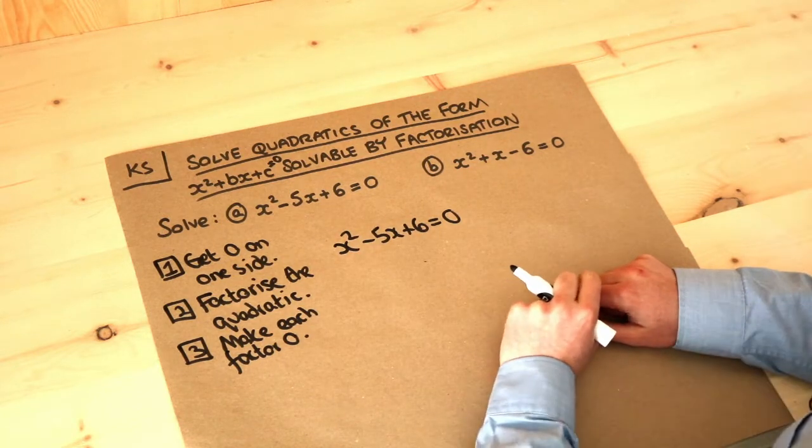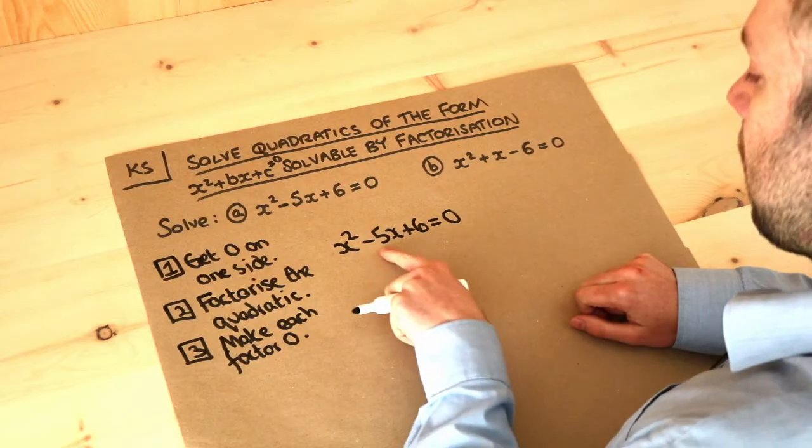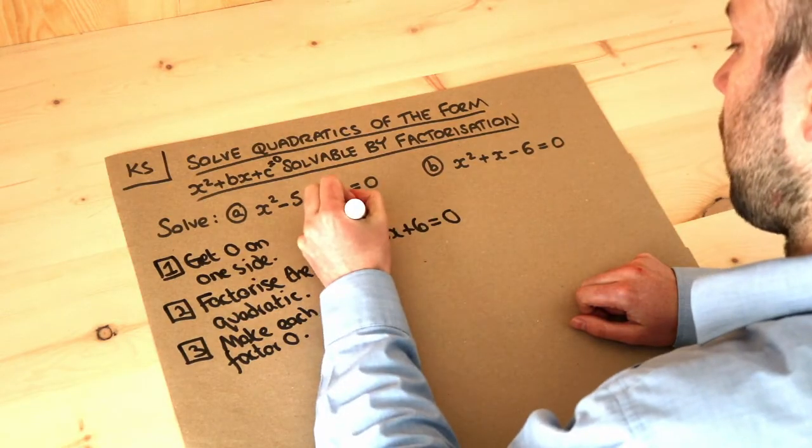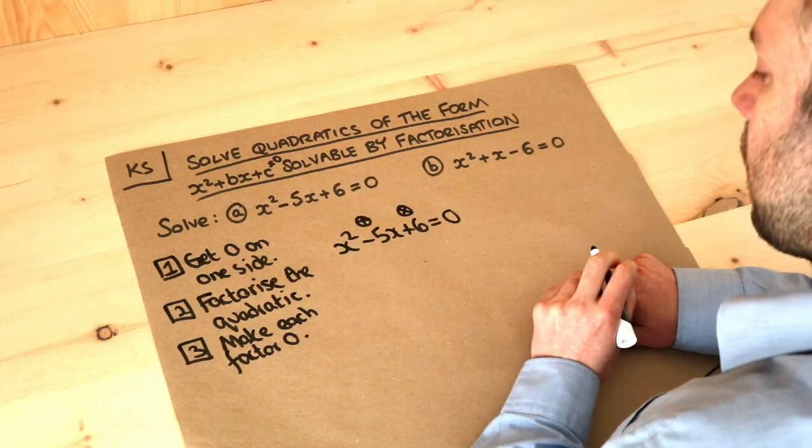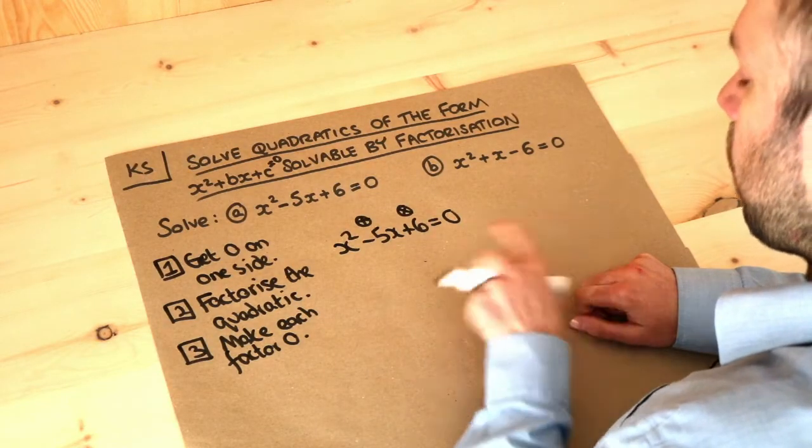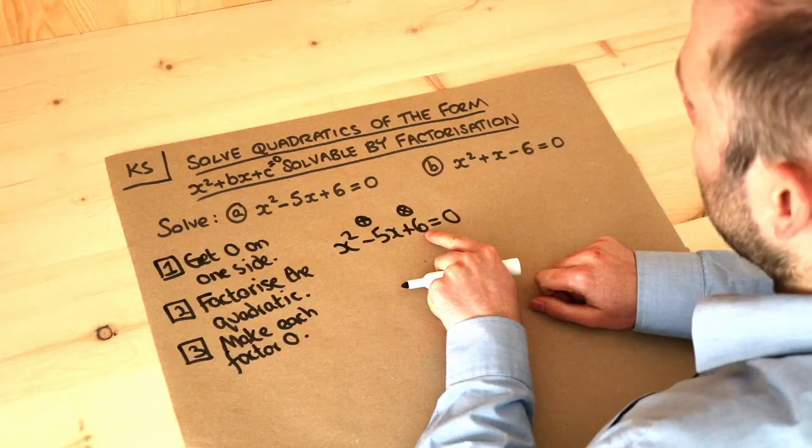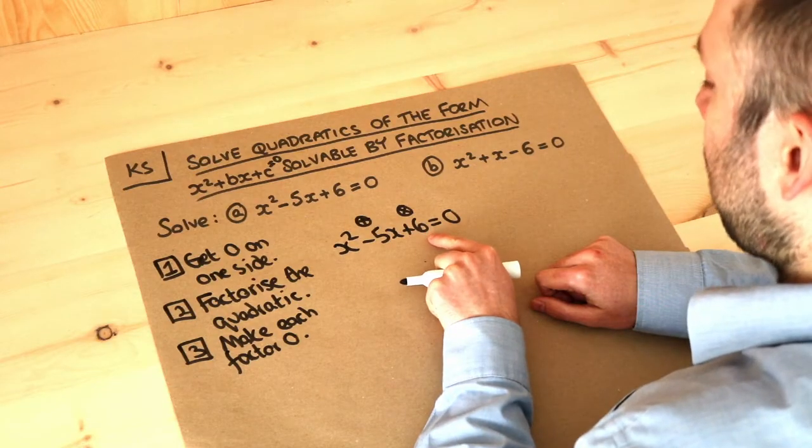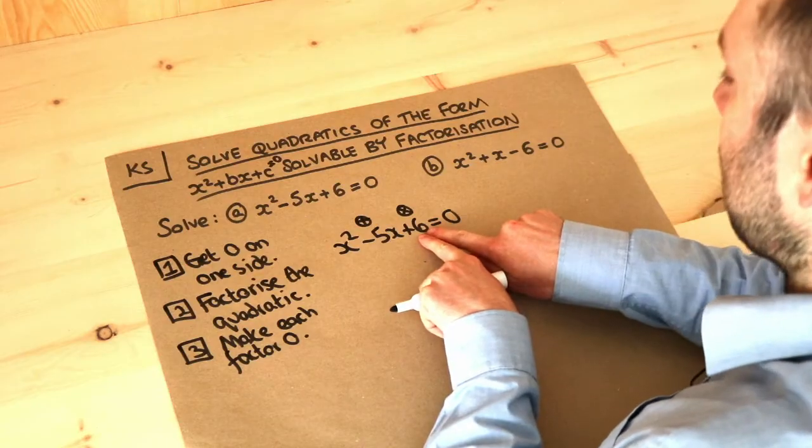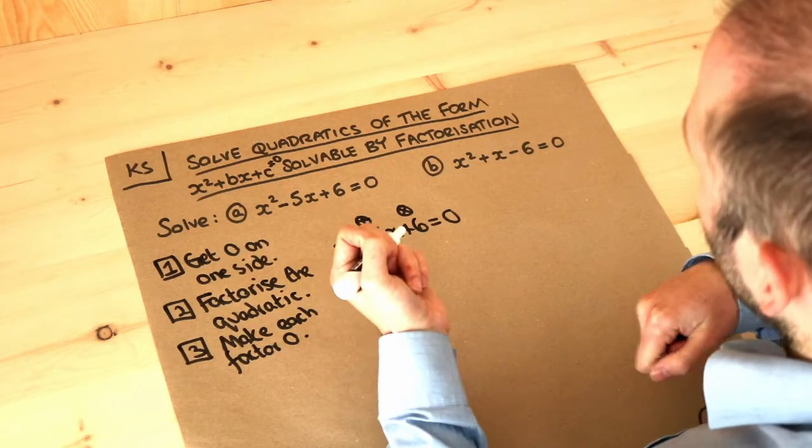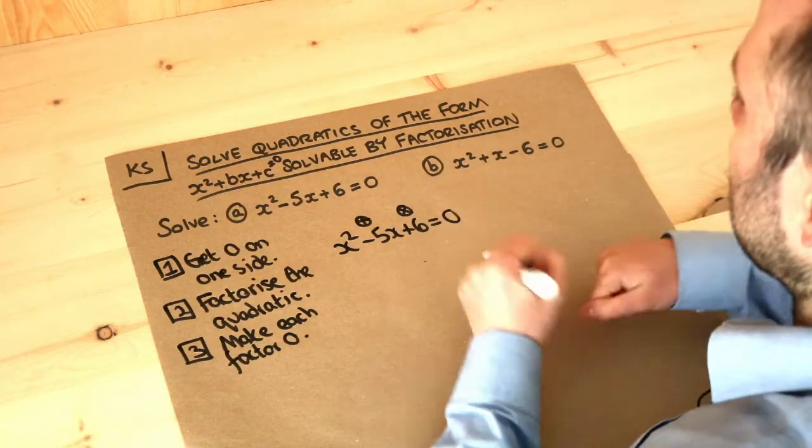Now do you remember the method for factorizing a quadratic? We need two numbers which add to give the minus five and multiply to give the six. What are those two numbers? Well, what numbers multiply to give six? Well it could be six and one. What about three and two? Well notice that if they multiply to give positive six, they either have to be both positive, which they can't be because they wouldn't add to minus five, or both be negative.